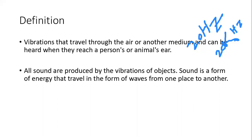Sound carries disturbance from one place to another place. Like other waves, sound is also produced by vibrating bodies. Due to vibration of bodies, the air around them also vibrates, and the air vibration produces sensation of hearing. For example, in a guitar, sound is produced due to the vibration of its string.